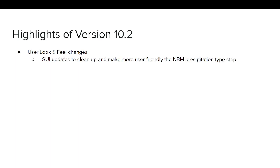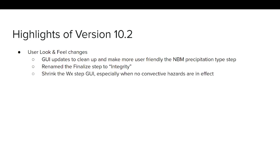The first is a variety of user look and feel changes. The GUI updates are mostly going to clean up and make the MBM precipitation type step more friendly for the user. We also renamed the finalized step to 'integrity,' since 'finalized' was a misnomer given that it happens early in the process. We also shrank the weather step GUI, which has been a problem for many versions of Forecast Builder, almost dating back to the very beginning.